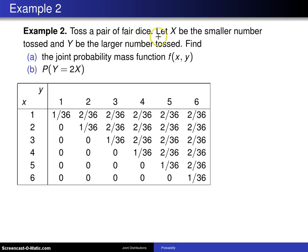Toss a pair of fair dice, let x be the smaller number tossed and y be the larger number tossed. Find the joint probability mass function f of x, y and the probability y equals 2x.